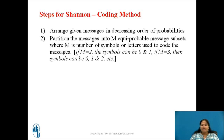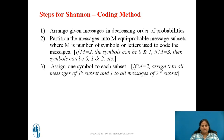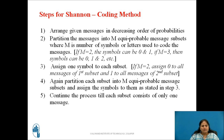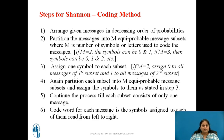For example, if m equals 2, then 2 symbols are used, that can be 0 or 1; or if m equals 3, then 3 symbols can be used, for example 0, 1 and 2. Next, assign 1 symbol to each subset — for example if m equals 2, assign 0 to all the messages in the first subset and 1 to all the messages in the second subset. Next, again partition each subset into m equiprobable message subsets and assign the symbols as stated in step 3. Continue this process till each subset consists of only one message. The codeword for each message is then obtained by reading the symbols assigned to them from left to right.